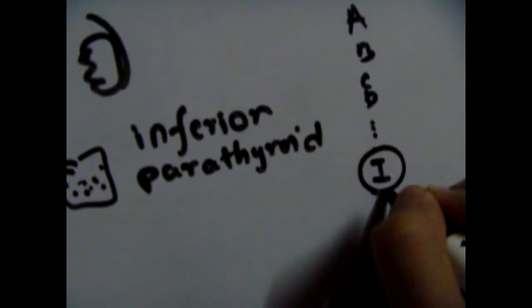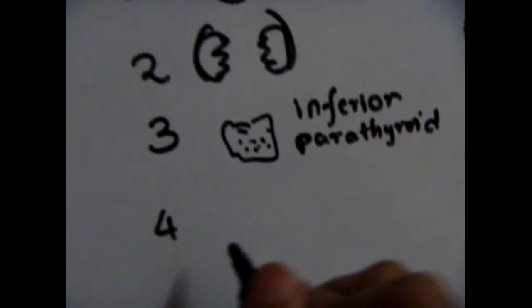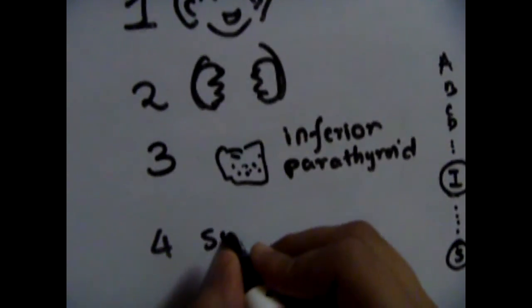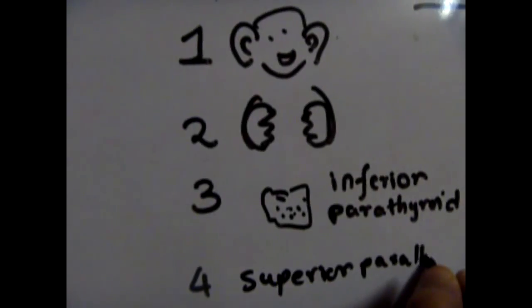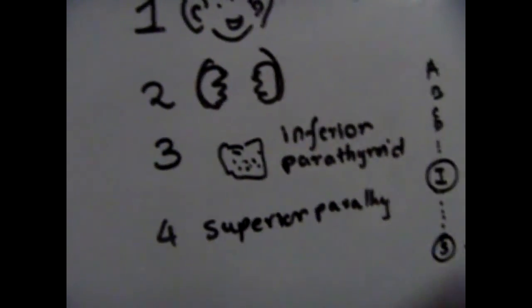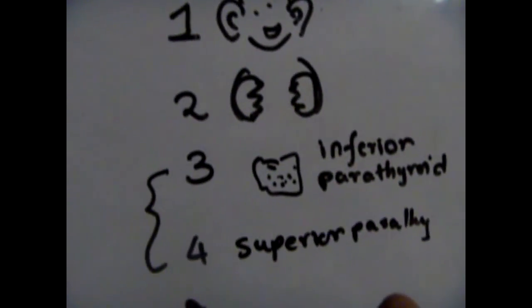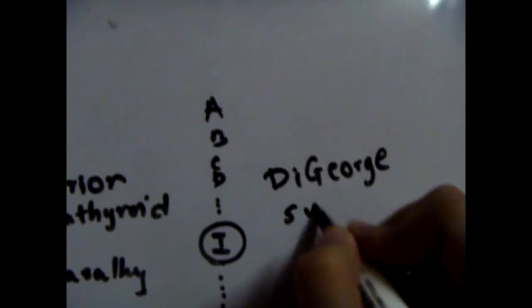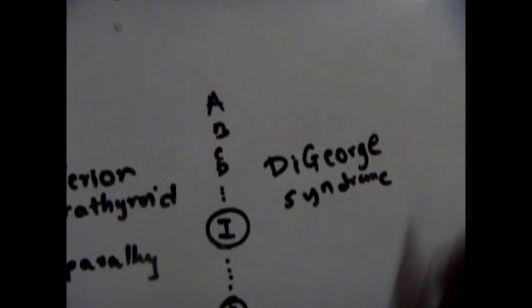So the fourth branchial pouch gives the superior parathyroid, and that's how I remember that. And if third and fourth branchial pouches don't develop properly, it is associated with DiGeorge syndrome.